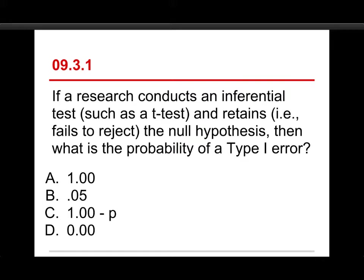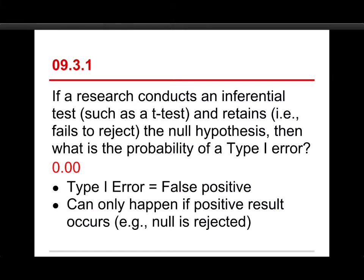The answer to this one is actually zero. The reason for that is a Type 1 error is a false positive, and that can only happen if you have a positive that can be false. So a positive means that you have a positive result, that you've rejected the null hypothesis, that you've concluded that something is there, that something is happening.